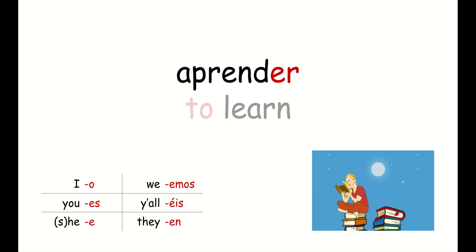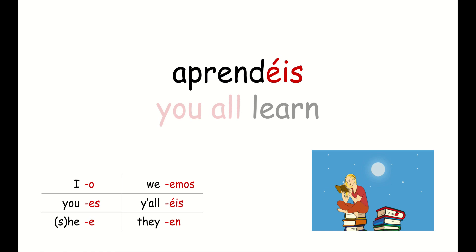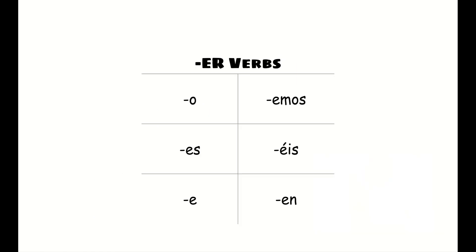Our last example: aprender means to learn. So if you take off the ER ending from aprender and replace it with éis — aprendéis — what do you think aprendéis means? If you guessed you all learn, you would be correct. Aprendéis el español. So in summary, these are the endings you're going to use when conjugating ER verbs. They're super similar to the AR endings, so they should be a lot easier to remember than starting from scratch.